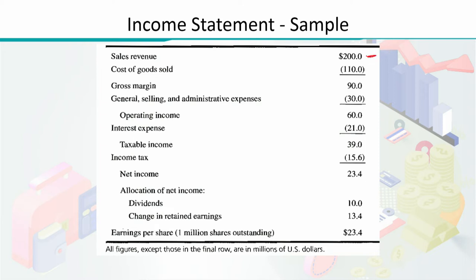Suppose the sales revenue generated is 200 million dollars. From this, we subtract the cost borne on labor and raw materials — the total cost of goods sold — which is suppose 110 million dollars. Subtracting the cost of goods sold from the sales revenue gives us the gross margin.